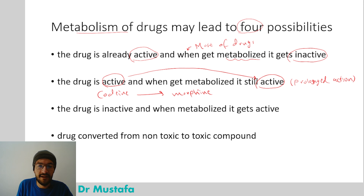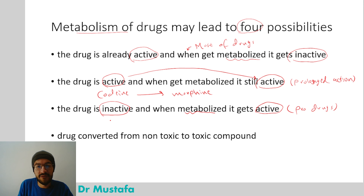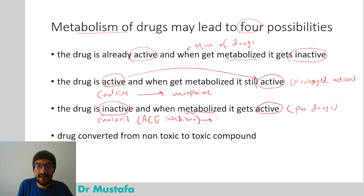The third possibility is that the drug is inactive when given to the patient but becomes active when metabolized — these are called prodrugs. An example is enalapril, an ACE inhibitor (angiotensin-converting enzyme inhibitor), which is metabolized into enalaprilat, the active metabolite that produces its effect.